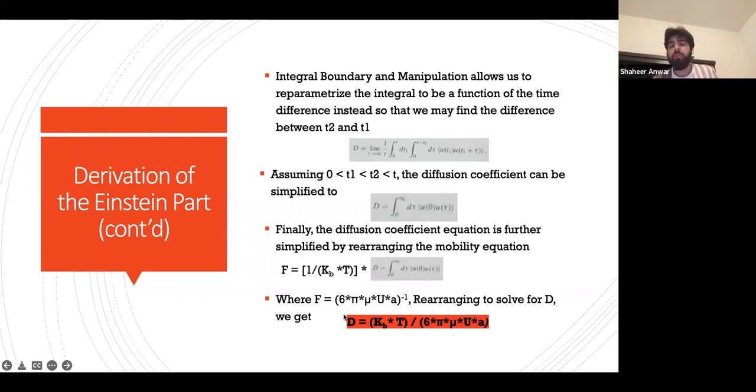If we rearrange to solve for D, we get that the diffusion coefficient equals D = (k_b * T) / (6πμua).